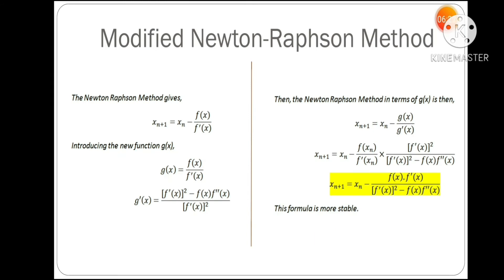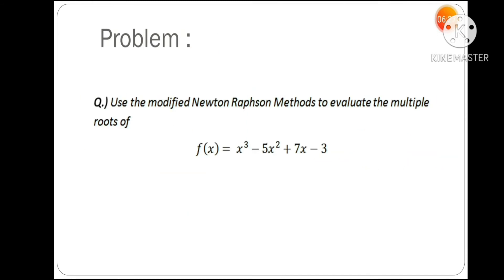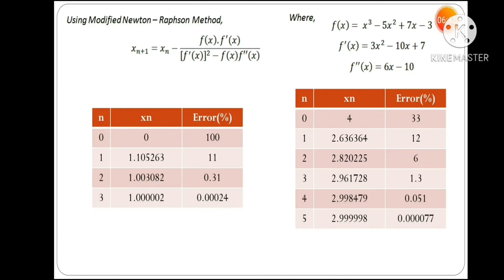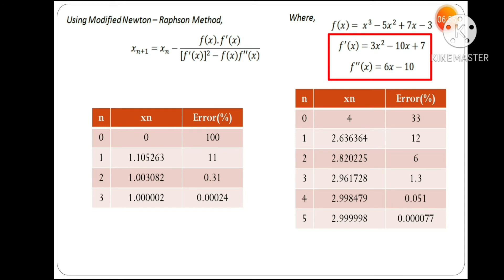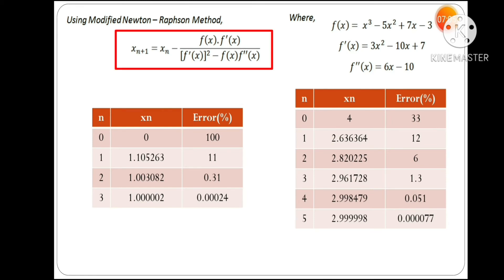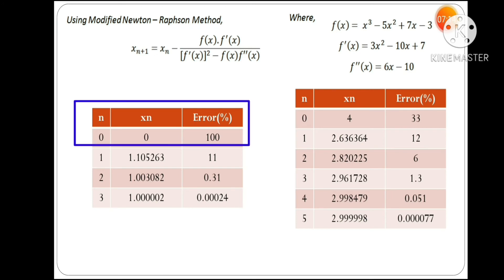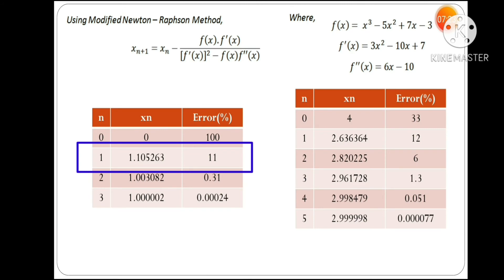We will now clarify this with a problem. We must use the modified Newton-Raphson method to find the multiple roots of f(x) = x³ − 5x² + 7x − 3. Simply compute f'(x) and f''(x), then substitute all values into the modified formula. The initial approximation is taken as x₀ = 0. After the first iteration we get x₁, which gives an error of about 11%, so we continue with more iterations.